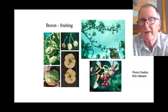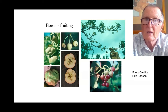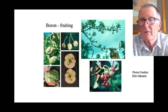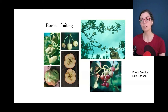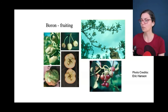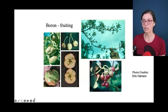So with boron deficiency you can get lumpy-looking fruit, browning inside when you cut the fruit open, deformed or too-small cherries, and poor fruit set. It's easy to confuse some of these symptoms with pest or disease issues. A little boron is necessary, and without it you can have big problems.